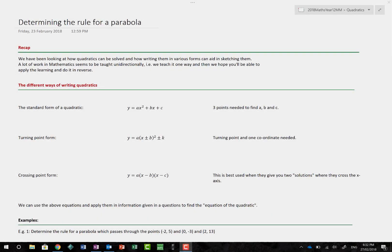Hi and welcome to this Methods 3 & 4 lesson on determining the rule for a parabola. In our previous videos we've been looking at how quadratics can be solved and writing them in various forms which will aid us in sketching them. So we've been able to draw by finding the turning point and finding the x-axis intercepts and the y-axis intercepts and anything else we need, the axis of symmetry, for example. These are all important pieces of information to help us sketch our graphs.